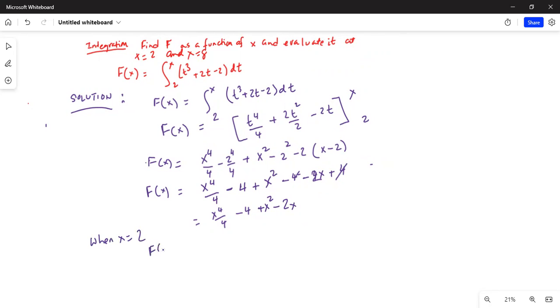F of 2 is equal to 2 to the power of 4 divided by 4 minus 4 plus 2 square minus 2 times 2. This is equal to 2 to the power of 4 is 16, 16 divided by 4 is 4 minus 4 plus 4 minus 4, and that is equal to 0.